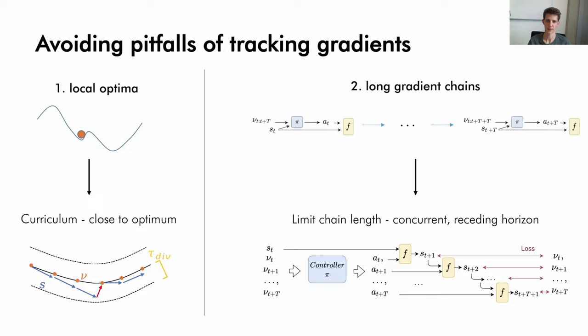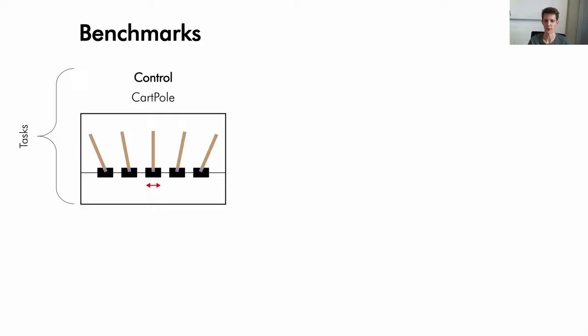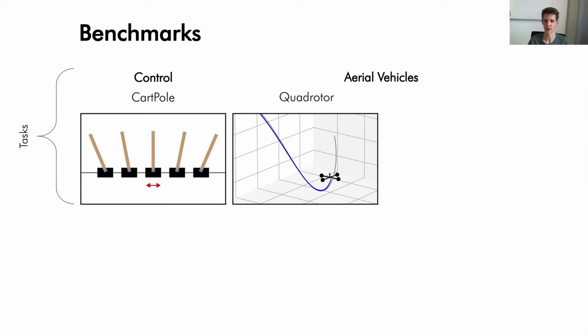We evaluate our approach first on a classical control task, the cart pole, and test it on trajectory tasks for two typical aerial vehicles, a quadrotor and a fixed wing.